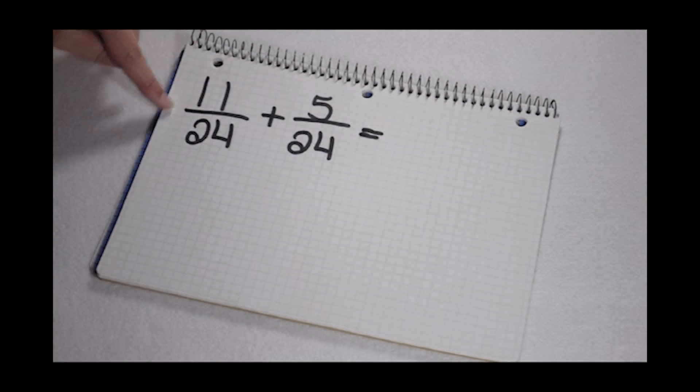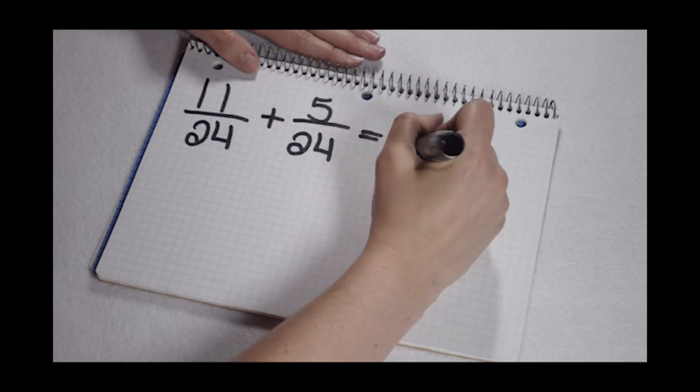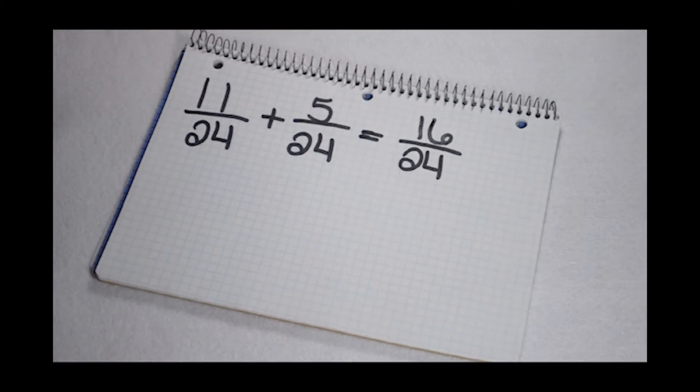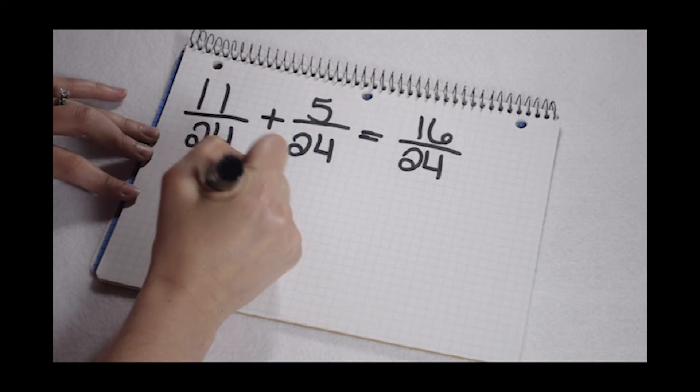We are adding 11/24 plus 5/24. The first thing we know is our denominator is going to be 24. Now I can add my numerators. It gives me 16. But 16 and 24 are going to have common factors.